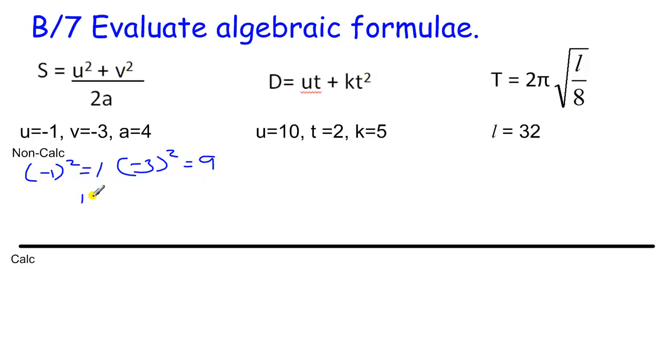So we end up with 1 plus 9 over 2 lots of a, which is 8. So that's 10 over 8, or 5 over 4. You can change that to decimal if you must, which is 1.25, but I prefer to leave it as a fraction.